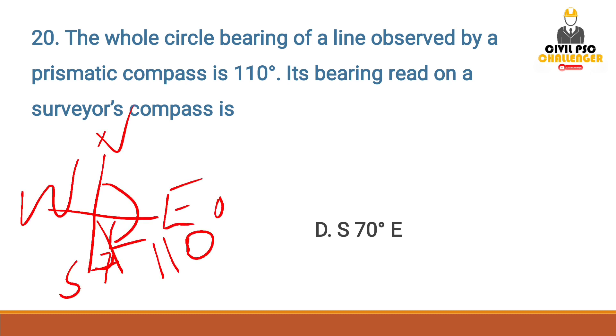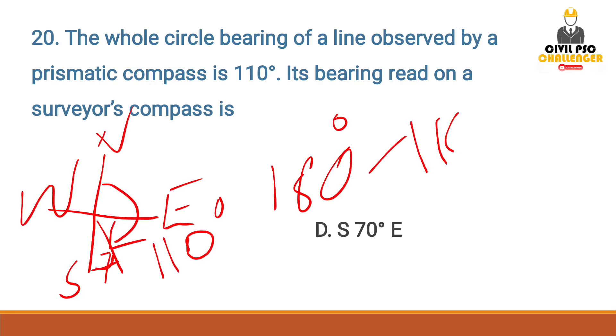This is the reduced bearing. We calculate 180 minus 110 degrees, which gives 70 degrees. Now we mark the direction.